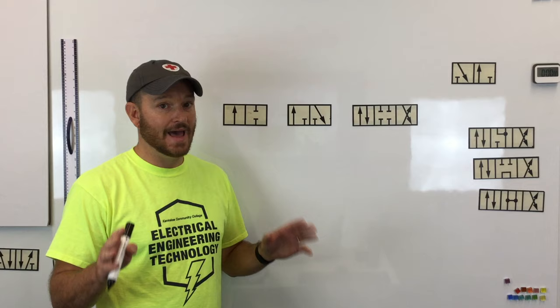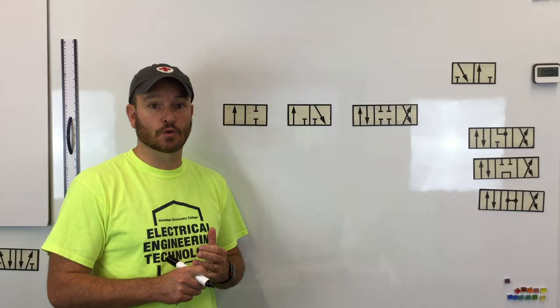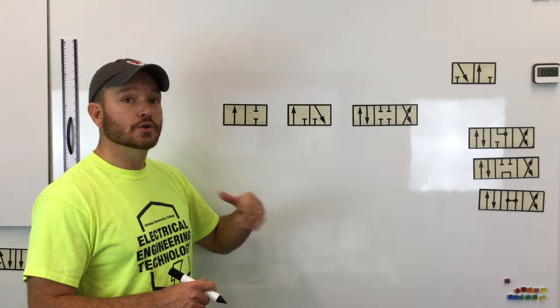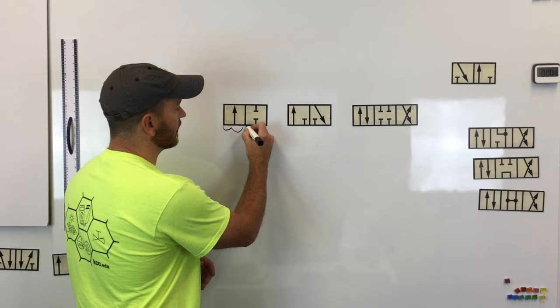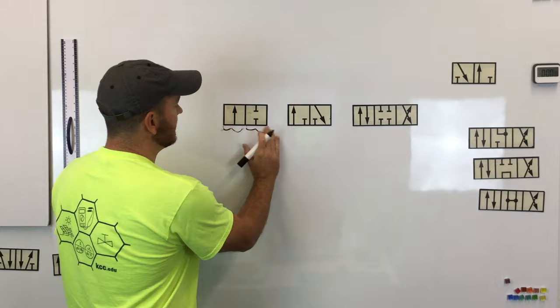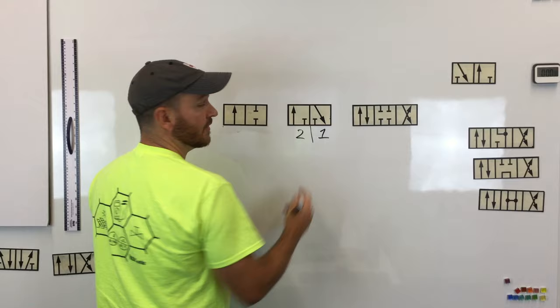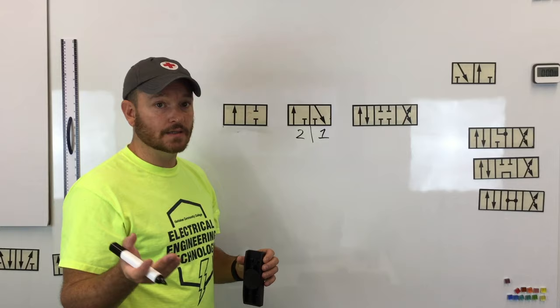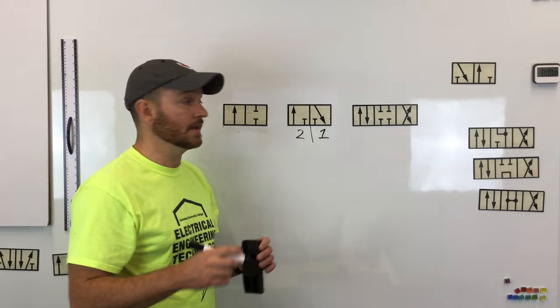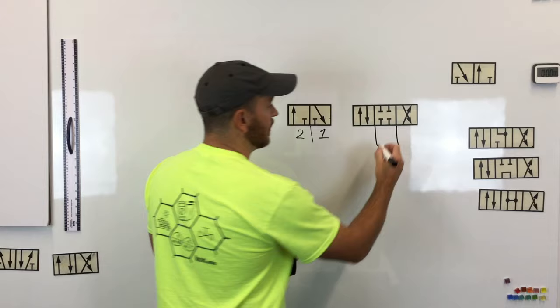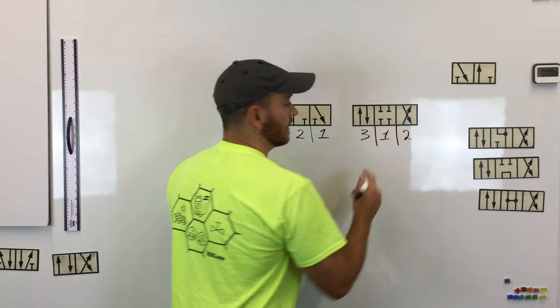There have to be at least two positions in a directional control valve. Each one of these boxes is a position, meaning that it can switch between these two positions. This side is one position, this side is two. Two positions are very common in both pneumatics and hydraulics, but there are also three positions, which are much more common in hydraulics. You can see here that we have three positions: the center position, two, and three.